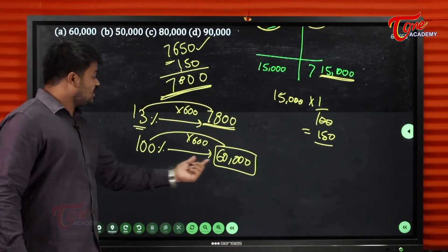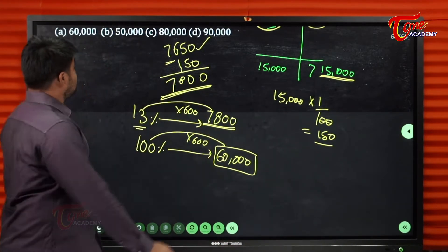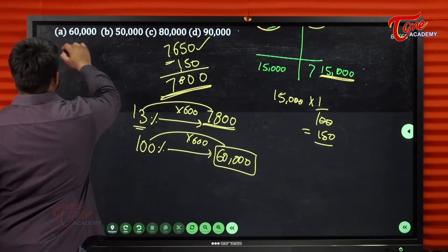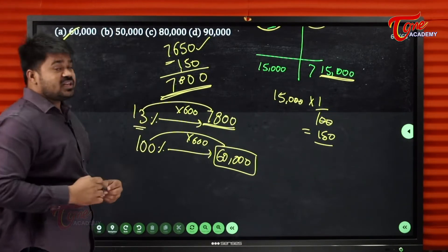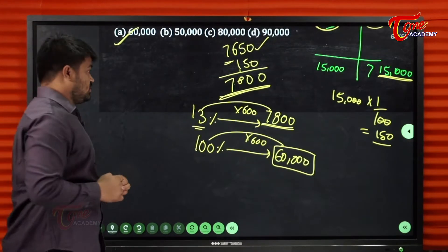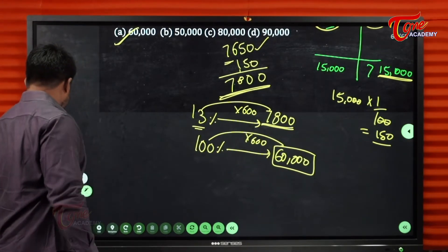So 100% is 60,000. The answer is 60,000. Let's do the next question.